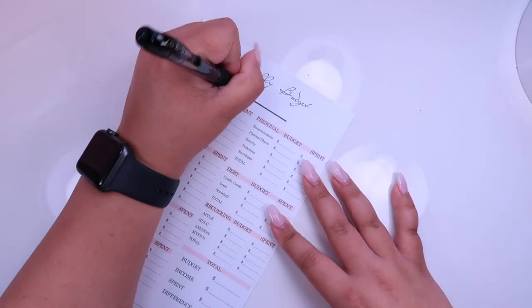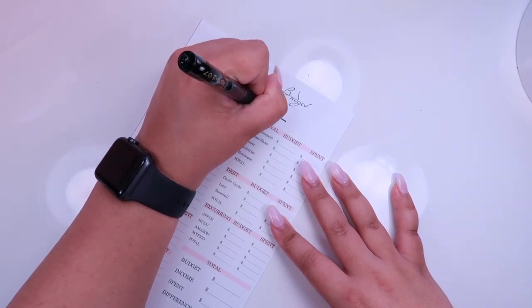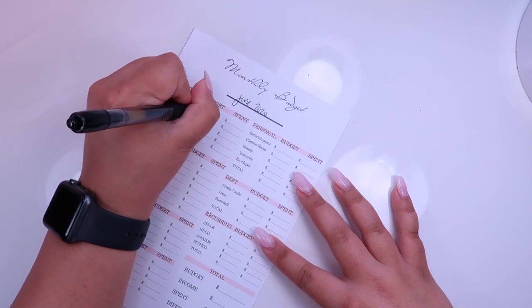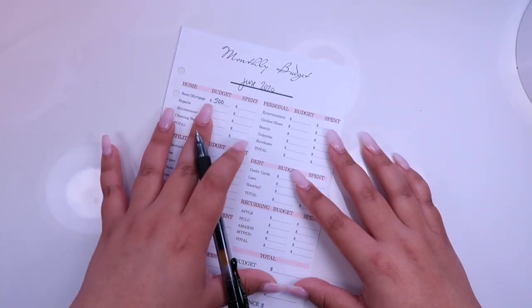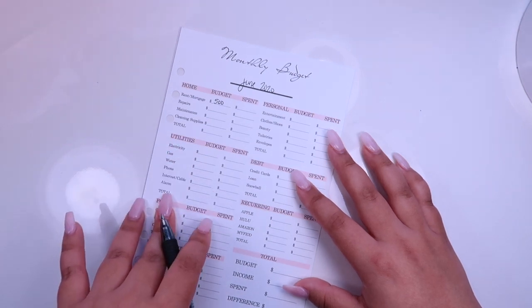So this is going to be for June. And my rent is $500. So I do live with my family. This is the payment that I give per month, and that includes all of the utilities as well.